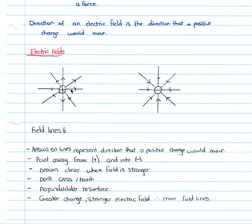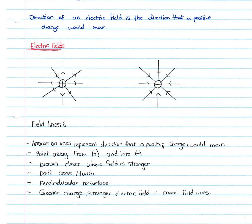If we look at a positive charge, our field lines go outwards because a positive charge would be repelled by our positive point charge, and therefore our field lines move outwards — they show the direction of movement of a positive charge. Whereas if we look at a negative charge, our positive charge would move inwards due to attraction, and therefore our field lines move in towards the negative charge. Field lines have arrows representing the direction a positive charge would move — pointing away from a positive charge and into a negative charge. They are drawn closer where the field is stronger, they don't cross or touch, they are always parallel, and they are perpendicular to the surface. The greater the charge, the stronger the field, and therefore the more electric field lines.